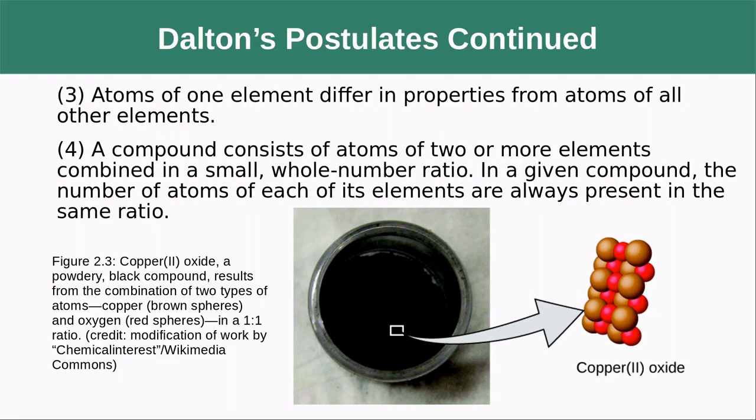His third postulate is that atoms of one element differ in properties from the atoms of all other elements. The fourth is that a compound consists of atoms of two or more elements combined in a small whole number ratio. In a given compound, the number of atoms of each of its elements are always present in the same ratio. He was really trying to explain how we have all this myriad of different materials when it's all based on just a small set of elements.